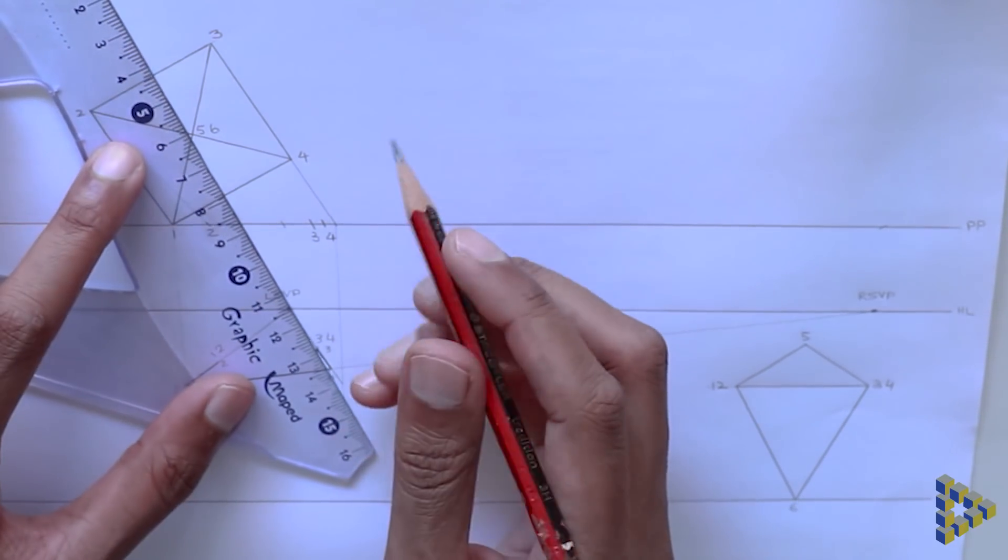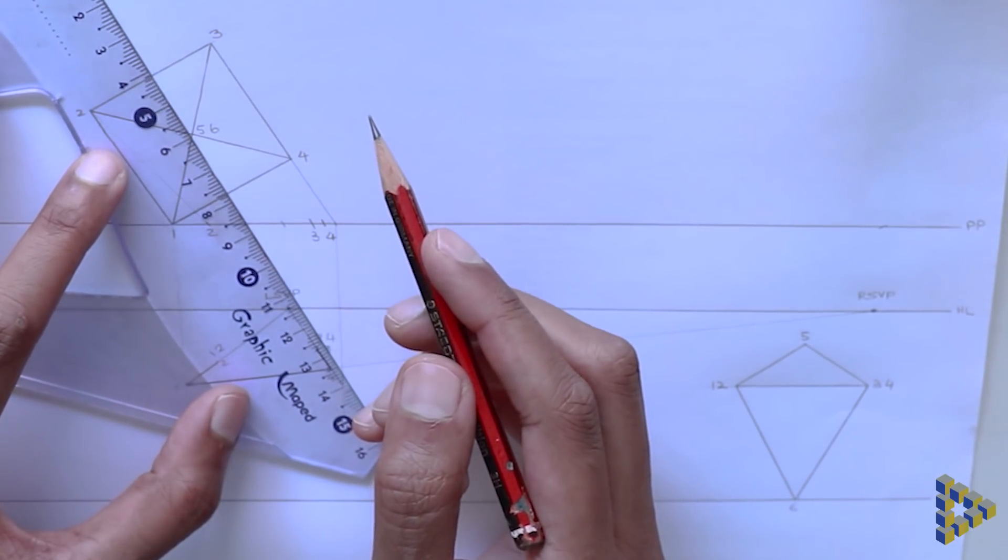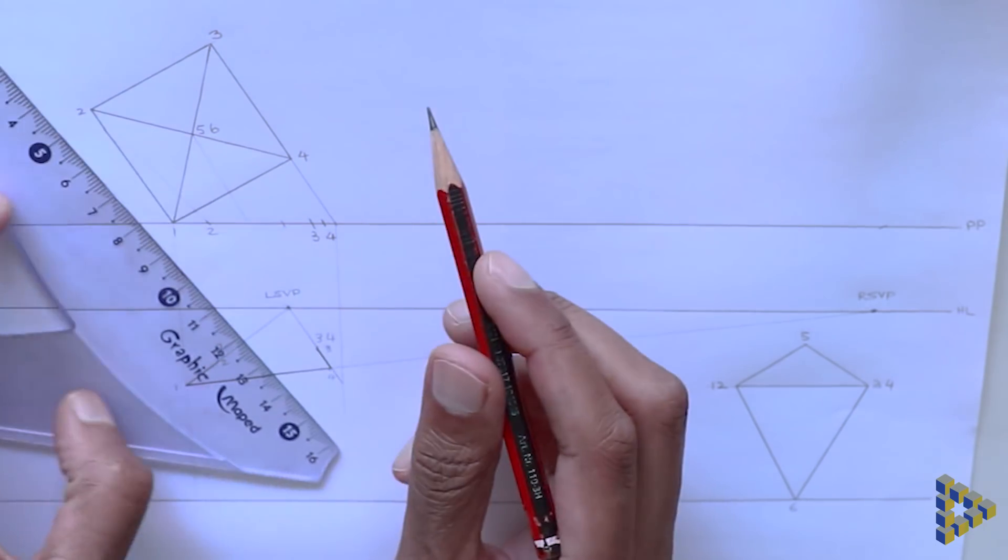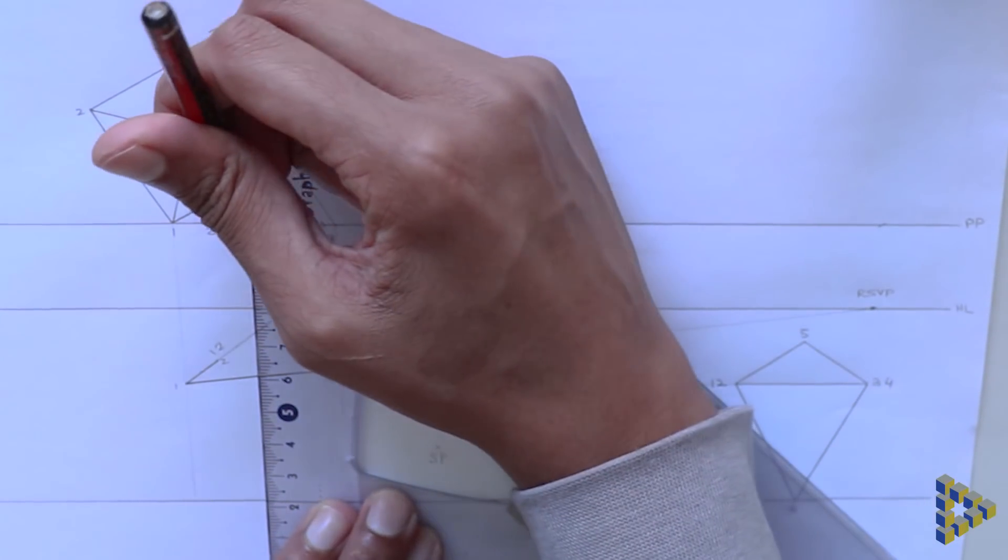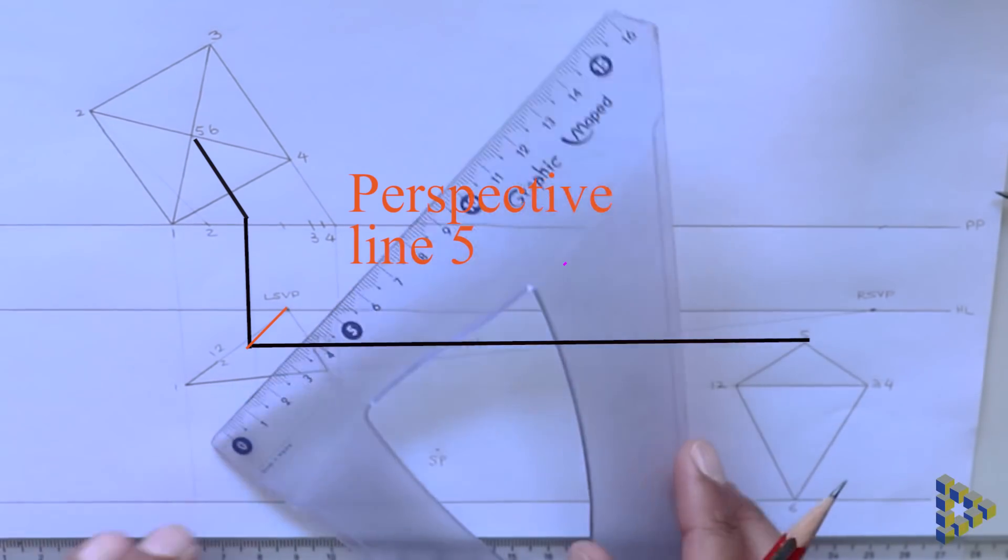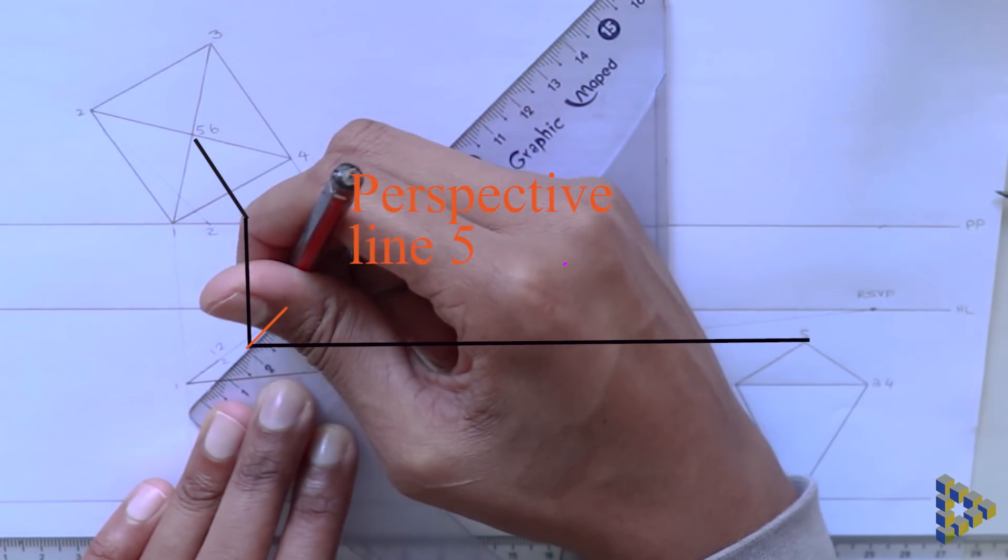We then follow the same procedure for points five and six. Note that these points are at different elevations to the points one to four and therefore their perspective lines will contain singular points.